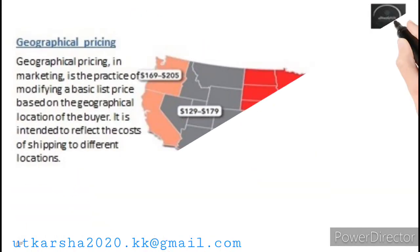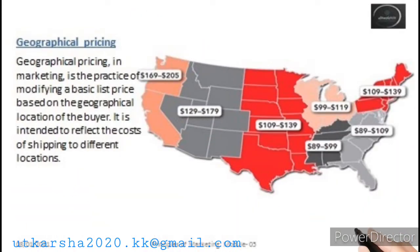Geographical pricing, in marketing, is the practice of modifying a basic list price based on the geographical location of the buyer. It is intended to reflect the costs of shipping to different locations.